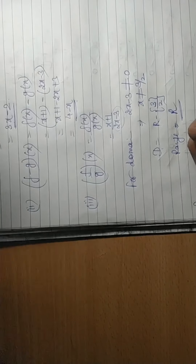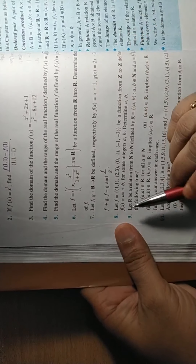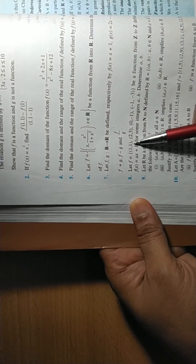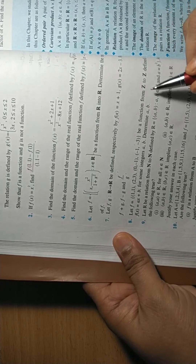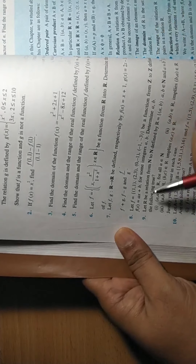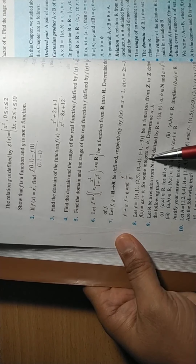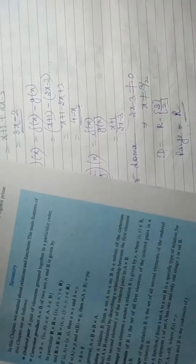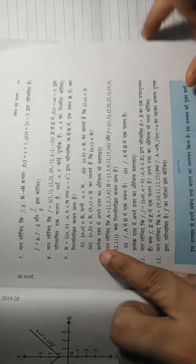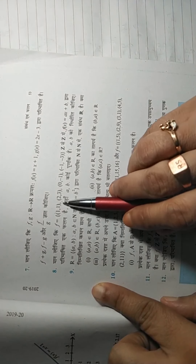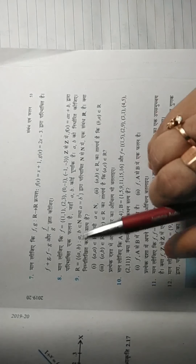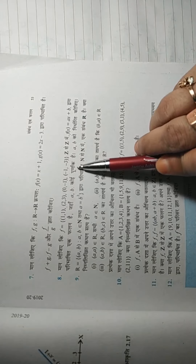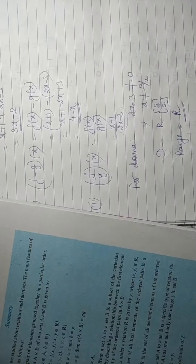Now come to question number 8. Let f = {(1,1), (2,3), (0,-1), (-1,-3)} be a function from Z to Z, where Z is the set of integers. It is defined by f(x) = ax+b for some integers a and b. Determine a and b. The function is defined for all of Z, but only four sample pairs are given.